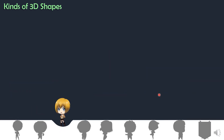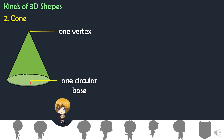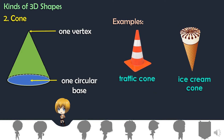Next we have the cone. Cone has one vertex and one circular base. This is the circular base of a cone. Examples of cone, we have traffic cone and the ice cream cone.